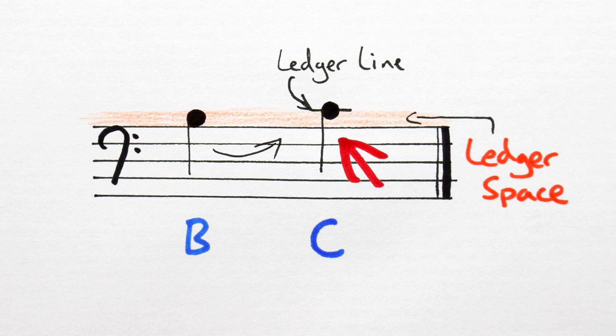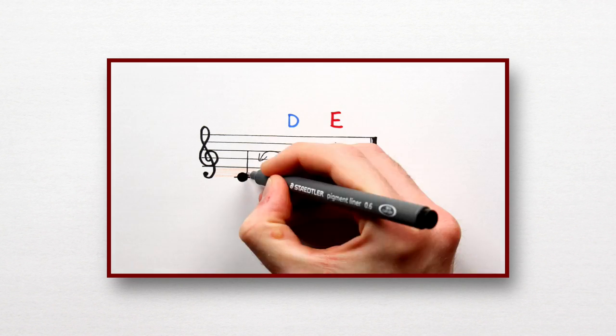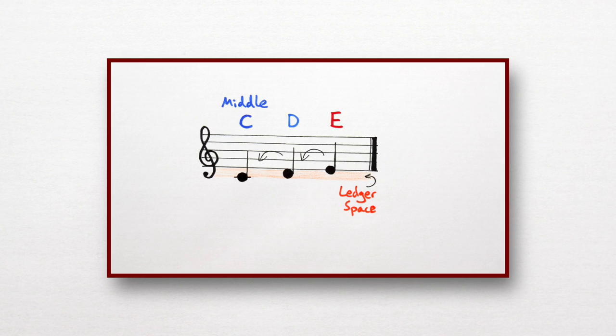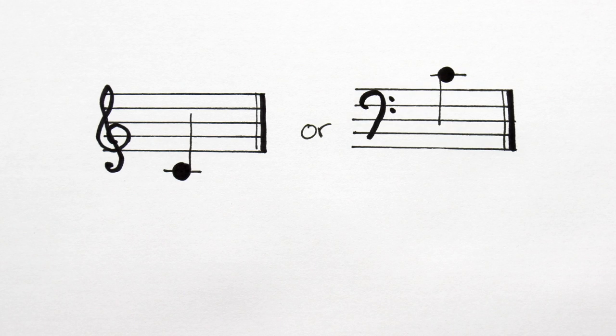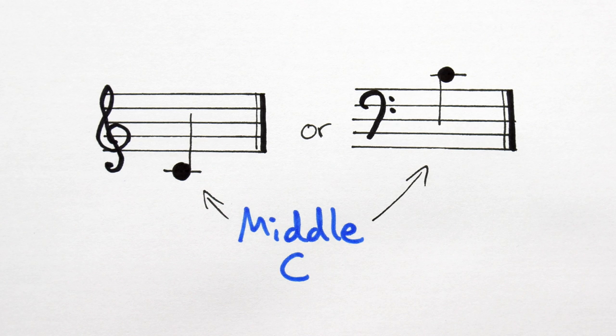Fun fact though, this C is no ordinary C. We call it middle C. The same middle C we encountered in the treble stave last time. Middle C can be written like this or this, but sounds the same whichever way we write it.